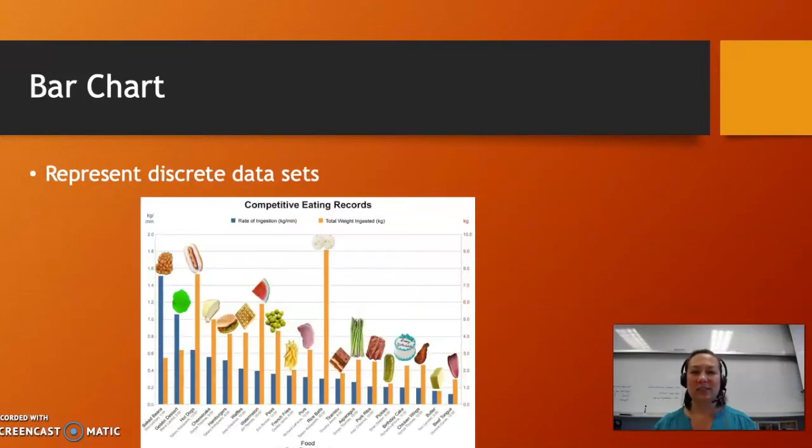A bar chart is different. In this particular competitive eating records chart, this represents what's called a discrete data set. There's nothing between french fries and pork. You can't have a fractional thing that's between asparagus and pork ribs. What we mean by discrete is that they stand alone.